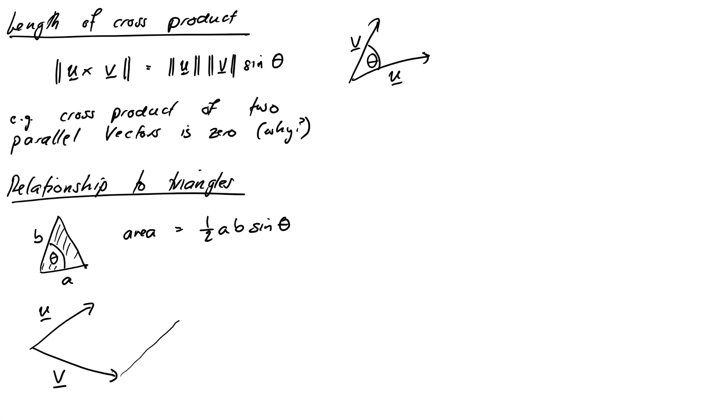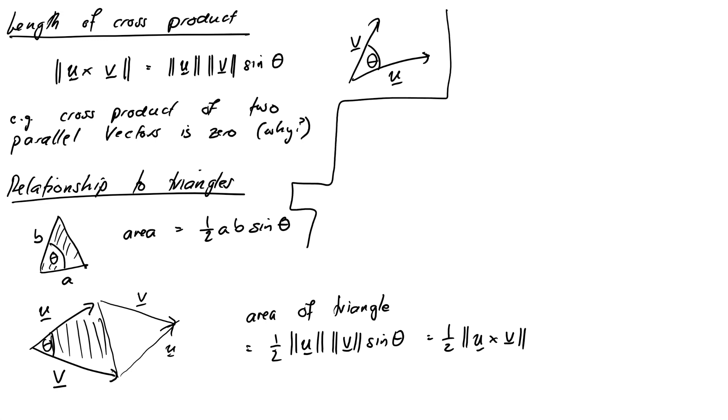So you can see this relates really nicely to the cross product. Let's take our two vectors u and v in 3D again, and we'll draw it on our parallelogram like we normally do. Then the area of the triangle, which is half the parallelogram, so let's shade it in here, is just going to be, using half AB sine C, half times the norm of u, that's the length of that side, times the norm of v, that's the length of the other side, times sine θ, which is just half the cross product of the two vectors. So the cross product is a really tidy way of finding the area of a triangle specified by vectors in 3D.